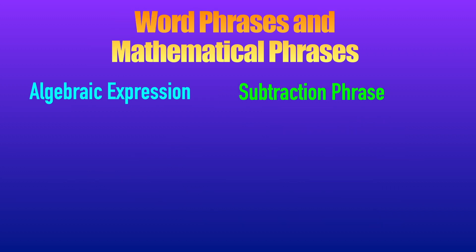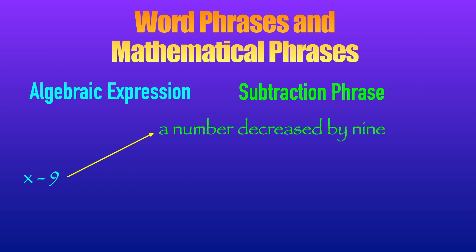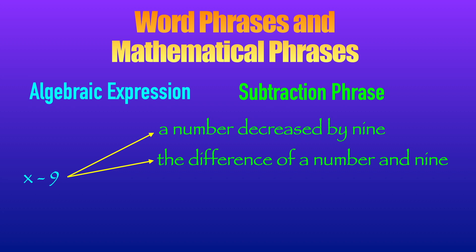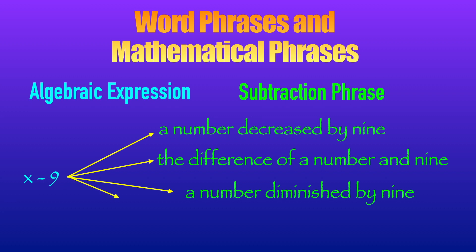Next, let's go to the subtraction phrase. For example, X minus 9. One of the subtraction phrases for this algebraic expression is 'a number decreased by 9.' Take note of the ones that did not change order. So: 'a number decreased by 9,' 'the difference of a number and 9,' 'a number diminished by 9,' and 'a number less 9.'